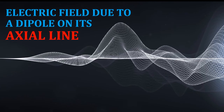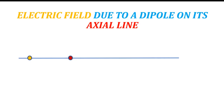In this video, we are going to see what is the electric field due to an electric dipole at points on the axial line. It is in Plus 2 Physics Electrostatics lesson. Let us consider a dipole minus q and plus q at points A and B. The center of the dipole is O, and the dipole is separated by a distance 2a.